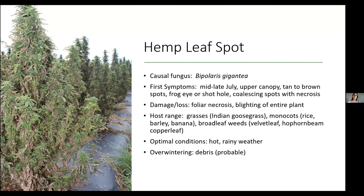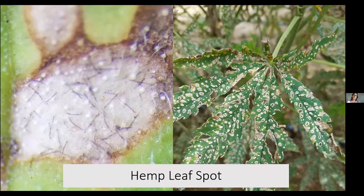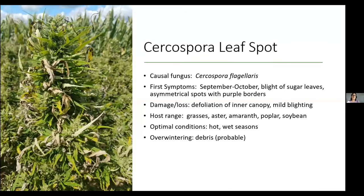Knowing the proper identification lets us know alternative hosts and how we can manage weeds to help reduce disease severity. Optimal conditions: we don't see it until it gets hot and rainy — not in the spring, even in weed hosts. It's only in July, sometimes into August. This is a late-season disease, probably overwintering in debris. Here are close-ups of bipolaris hemp leaf spot. On the right you'll see severe disease with spots and centers falling out. On the left, look for black dashes in the center — those are conidiophores holding spores above the leaf surface, visible to the naked eye — hence the species name gigantea. They're scattered, one per plant cell.